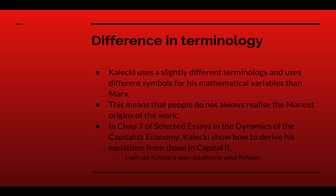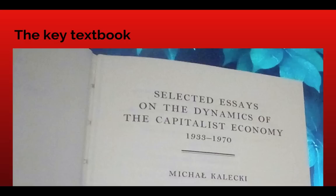I would recommend that people watching this video should initially have seen my video on reproduction schemes, which explains the key ideas in Volume Two of Marx's Capital — the ideas that Kalecki built on to construct a theory of the business cycle. There is some difference in terminology; he uses different symbols for his mathematical variables than Marx, which means people don't always realise the Marxist origins of his work. But if you look at chapter seven of his book Selected Essays in the Dynamics of the Capitalist Economy, Kalecki shows how he derived his equations from those in Capital Volume Two. I'm going to be using Kalecki's notation, not Marx's, though Kalecki explains how to translate between them. This book also contains his original 1933 paper.